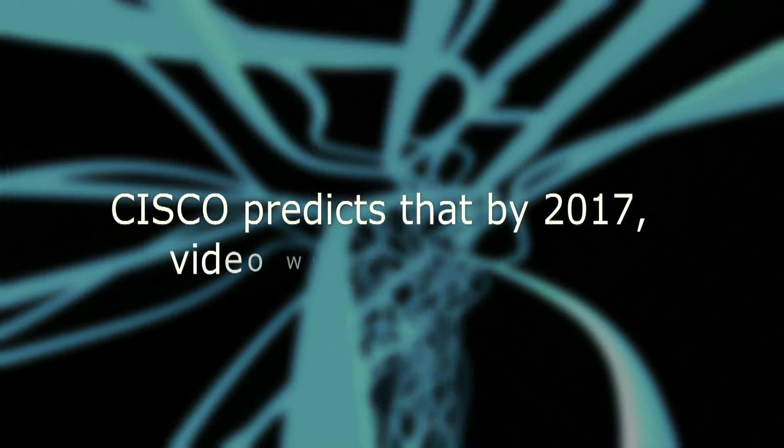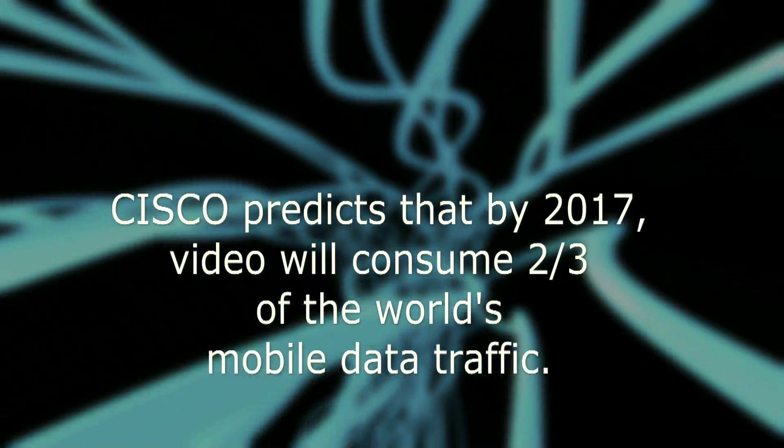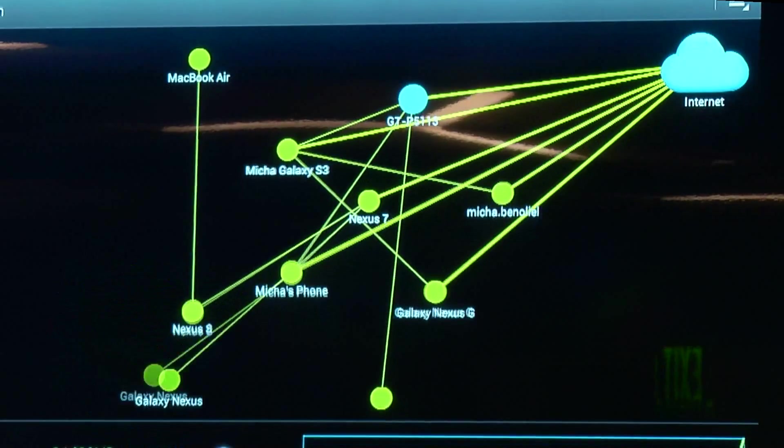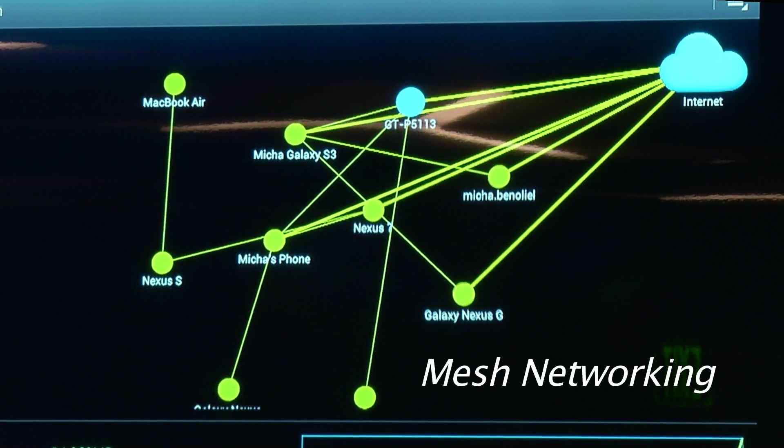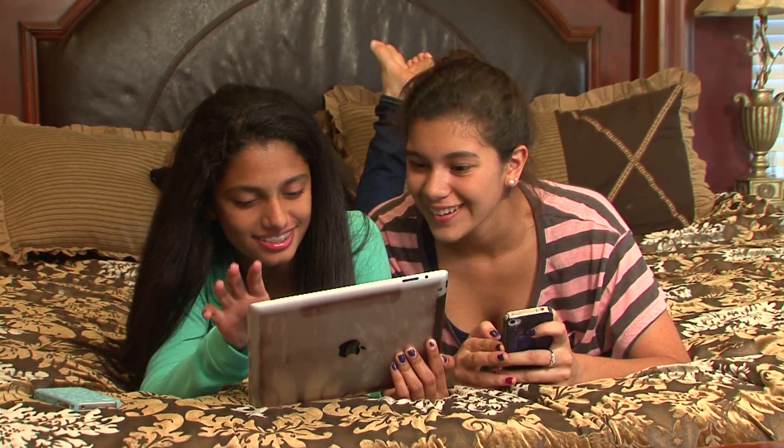Cisco predicts that by 2017, video will consume two-thirds of the world's mobile data traffic. In order to support these extensive downloads, there's an increased interest in technologies like mesh networking to optimize access to the internet. A mesh network is one built out of devices that communicate directly to each other. A mesh network is cheaper and faster to build than traditional networks, and the benefit is that you'll see faster access and coverage in places you didn't have any signal before.